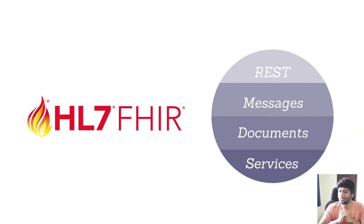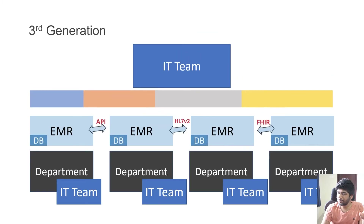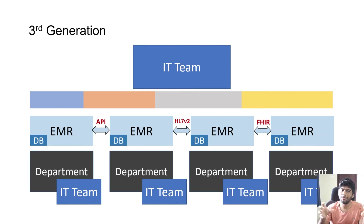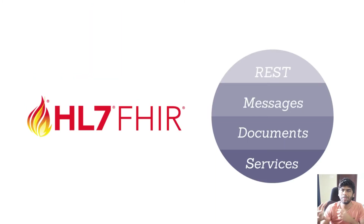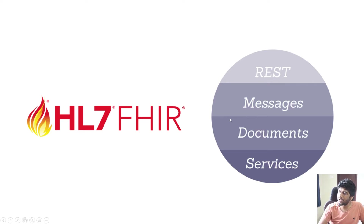After V2, there was something called V3, which nobody really followed because it was really complex — we'll skip that. After that, we got HL7 FHIR. FHIR stands for Fast Health Interoperability Resources. They came up with multiple paradigms of how you can communicate. The RESTful paradigm is the main one: you have a FHIR server and multiple applications that talk to it — creating patient records, deleting records, and persisting observations and conditions.